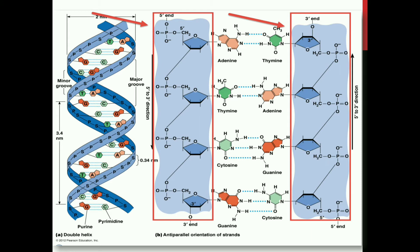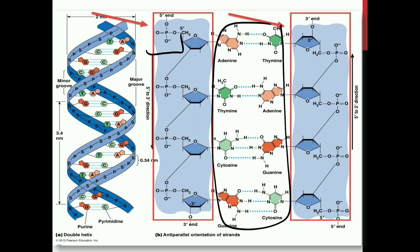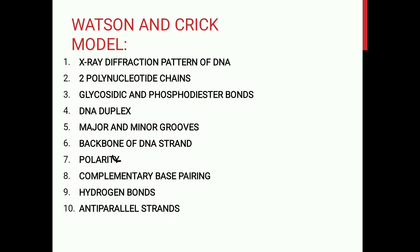Nitrogen bases तो अंदर की तरफ हैं। जो backbone बन रही है उसमें phosphate और sugar alternately चलते हैं — phosphate, then sugar, phosphate, sugar — और they together form the backbone of the DNA strands। जो nitrogen bases हैं they lie at 90 degrees, oriented अंदर की तरफ। Alternate deoxyribose sugar and phosphoric acid groups form the backbone of the DNA strand।